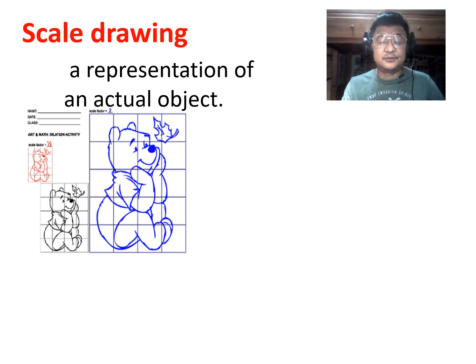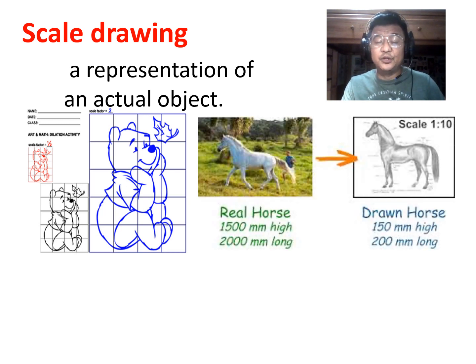See that? So the drawing is a representation of the real drawing of Winnie the Pooh. Or you have a real horse, you have to draw it into a representation, which is a drawing on paper. When you draw things, it should be in proportion.